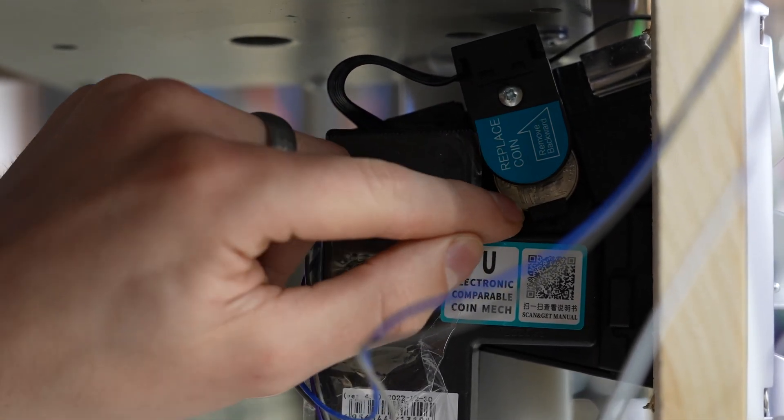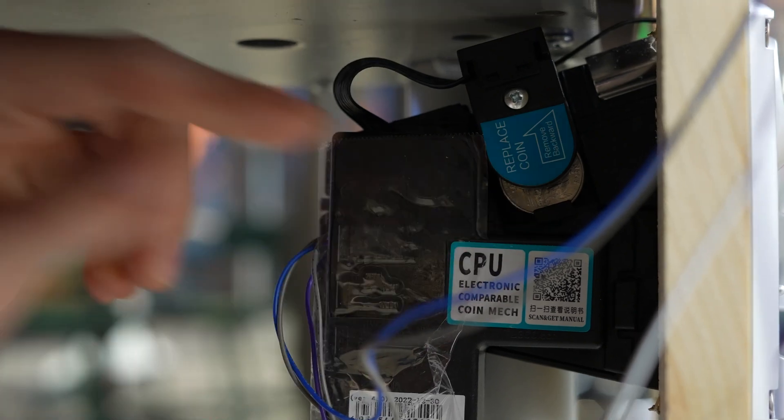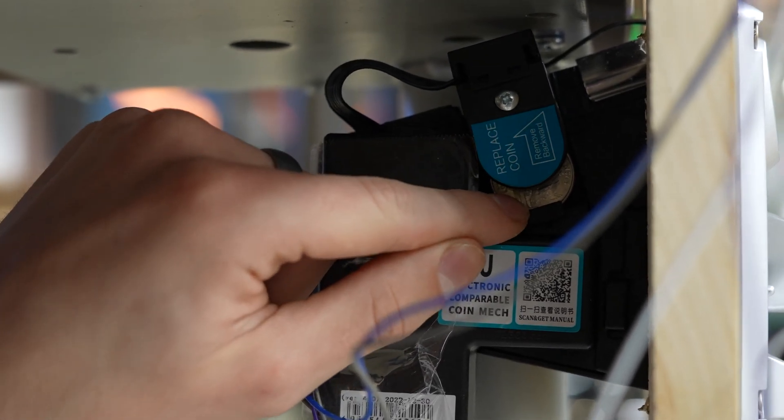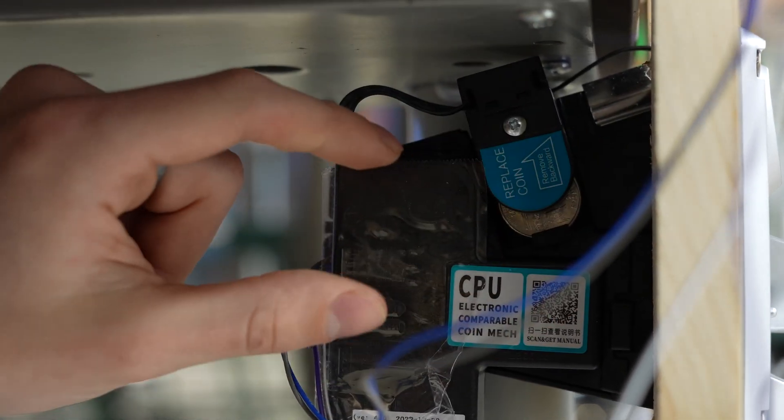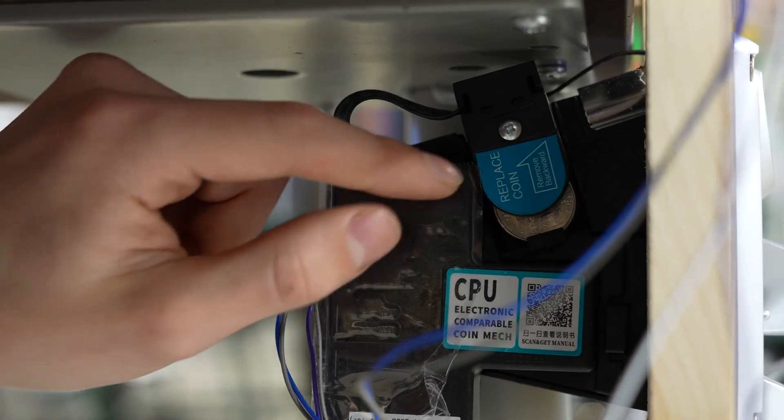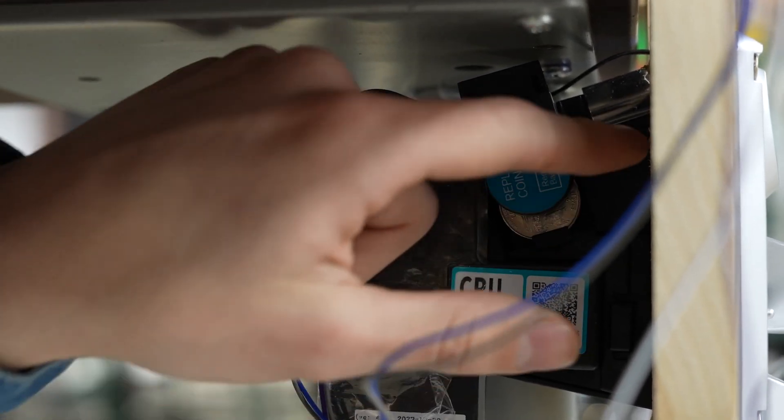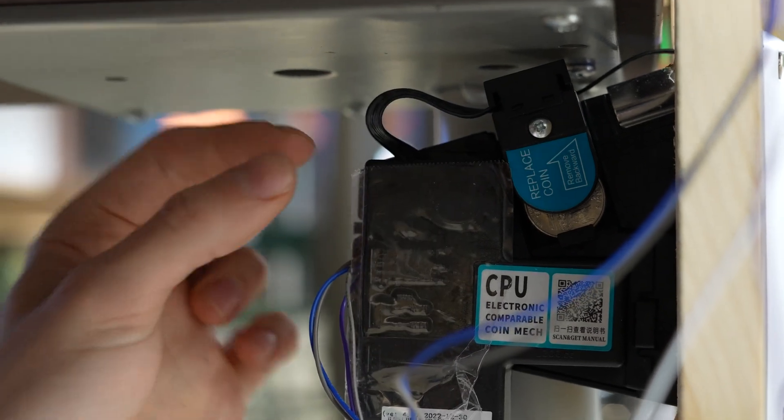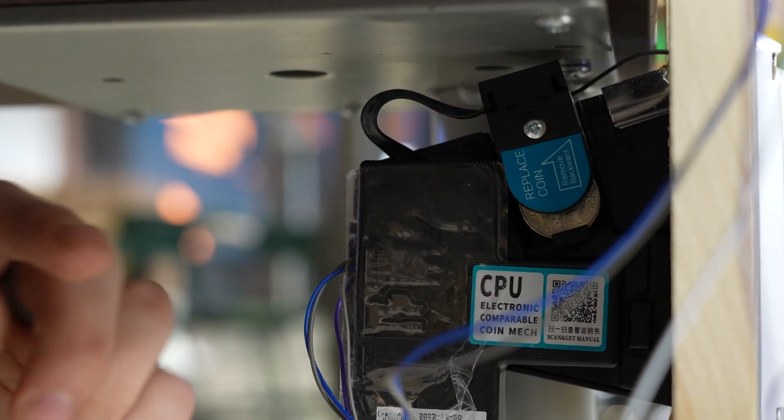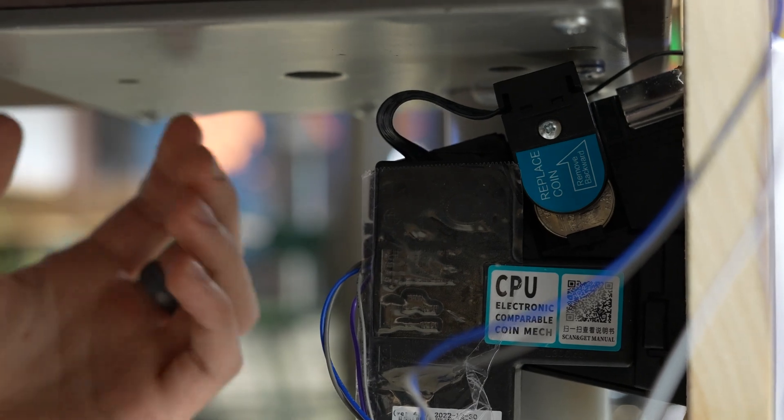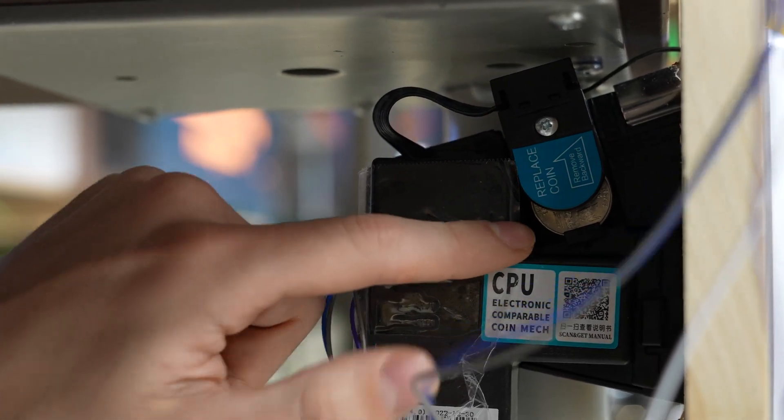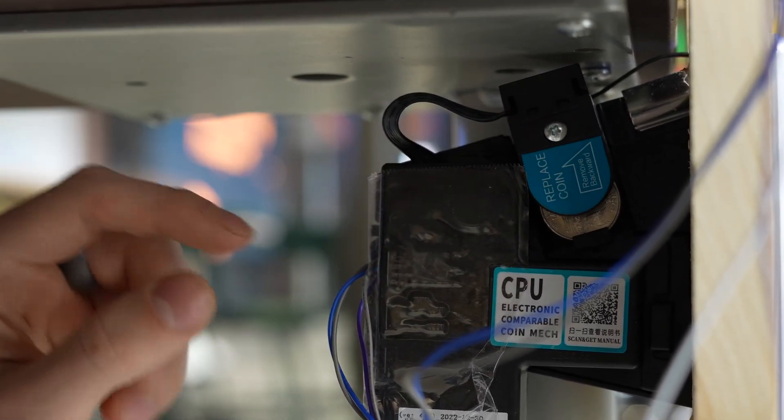It does this by understanding the magnetic personality essentially of the coin that's in there and comparing the coin passing through to that. So if we have a quarter in here and another quarter passes through it can say that these two coins are exactly the same. If we pass a penny through, while a penny is still metal it won't have the same magnetic ID as this quarter.